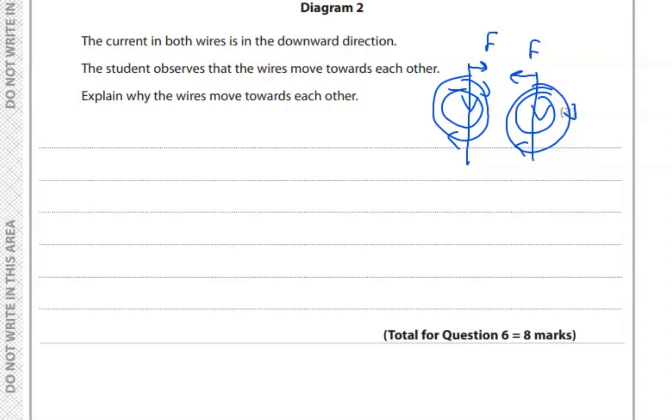So we can write: both wires - in both wires the current is acting downwards.